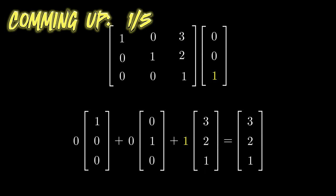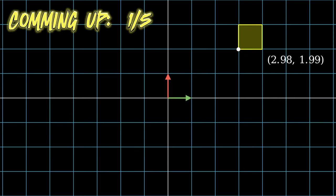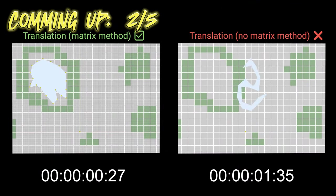In this video, you will know how to use homogeneous coordinates to represent a transformation. What's the benefit using matrix method?